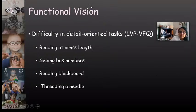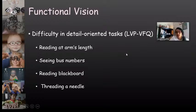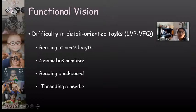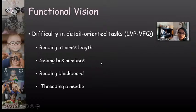A key area to consider is functional vision — how children perform in daily life — which is different from visual function measures in the clinic such as visual acuity, contrast sensitivity, or visual fields. Functional vision tells us how they perform in real life. One of the few studies using the Pediatric Visual Function Questionnaire found children reported difficulty with detail-oriented tasks: reading at arm's length, seeing bus numbers, reading the blackboard, and threading a needle.